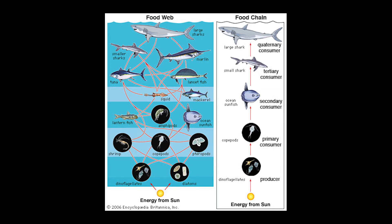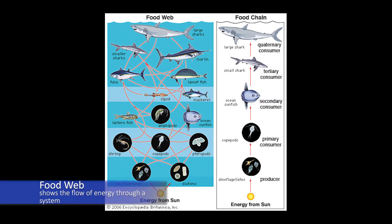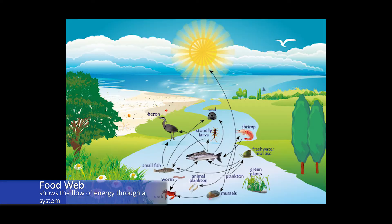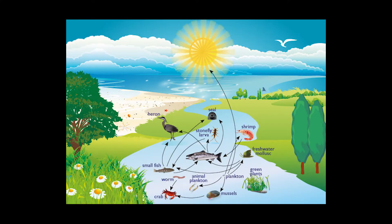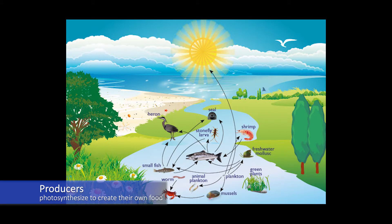What is a food web? A food web shows the flow of energy through a system such as an estuary, and it begins with the sun. Most life uses the energy that comes from the sun. Autotrophs or primary producers use about one percent of the sun's energy that reaches the earth's surface. Producers photosynthesize to create their own food and that starts a food chain.